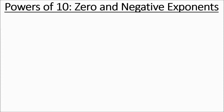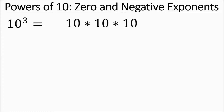Now we're going to talk about negative exponents and zero exponents. Starting with what we know: 10 to the third is the same as 10 times 10 times 10. You could also put a 1 in there, because the identity property allows that — anything times 1 is still the same thing. So that's still going to work out to 1,000. You'll see why I'm using that 1 in a moment.